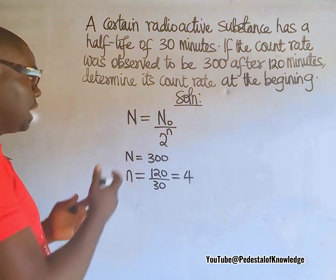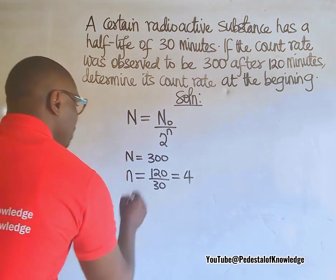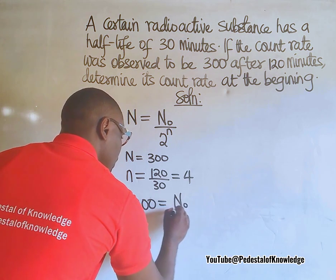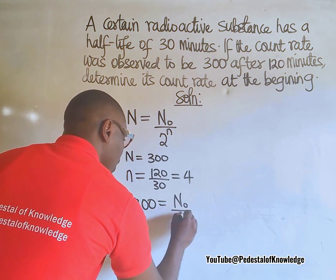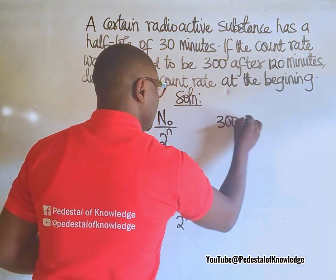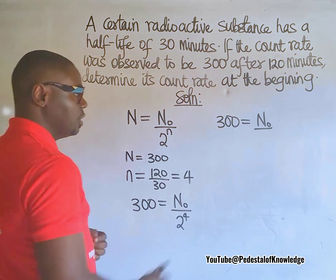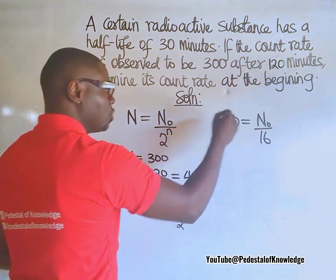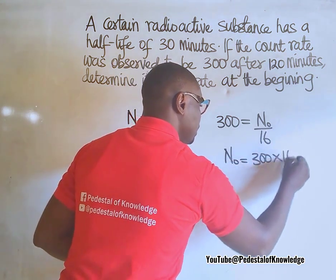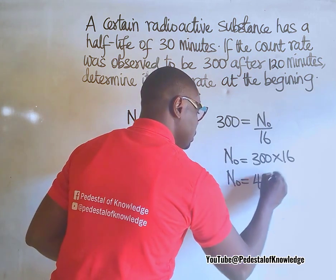We now find the original number of atoms — that is the count rate at the beginning. When we engage this formula, we have 300 is equal to N₀ divided by 2 raised to power 4. We know that 2 raised to power 4 is equal to 16. When we cross-multiply, N₀ is equal to 300 multiplied by 16, which gives us 4,800.